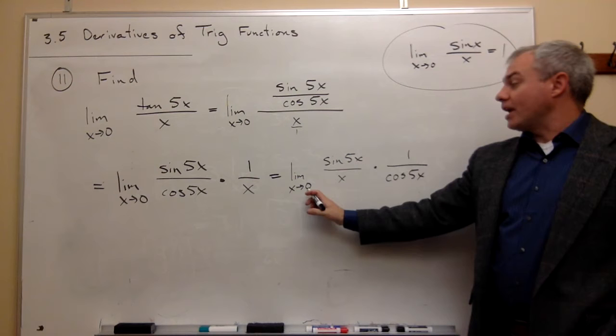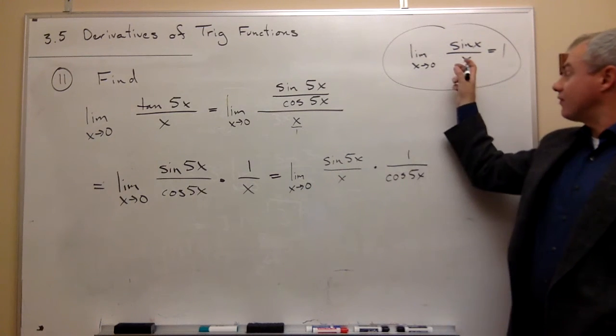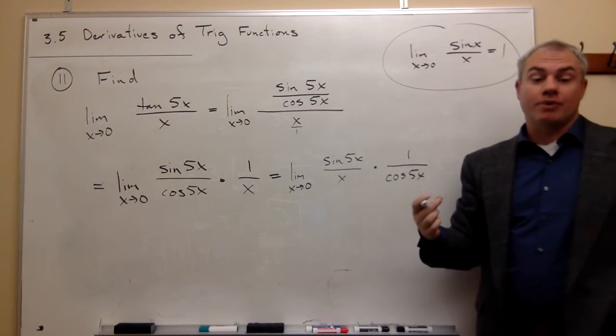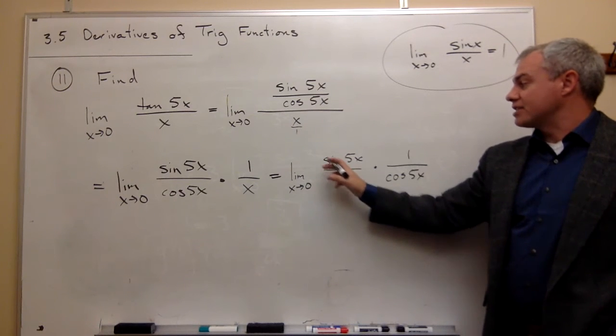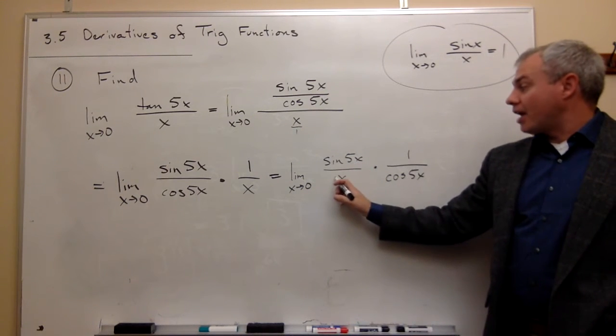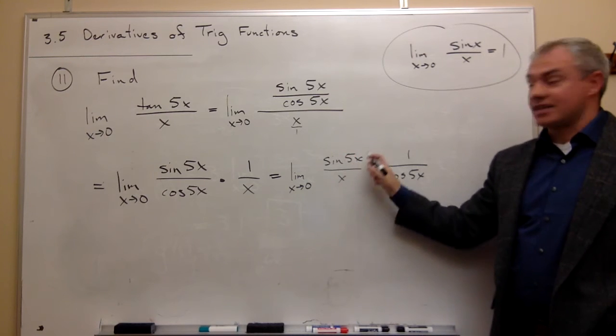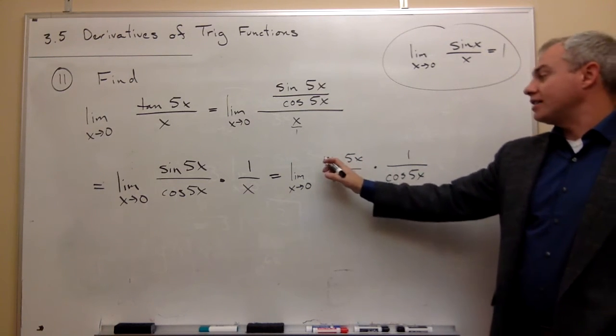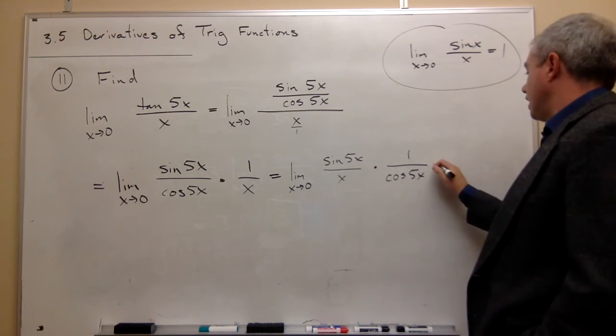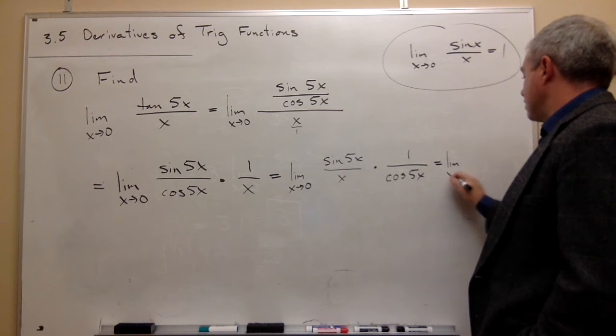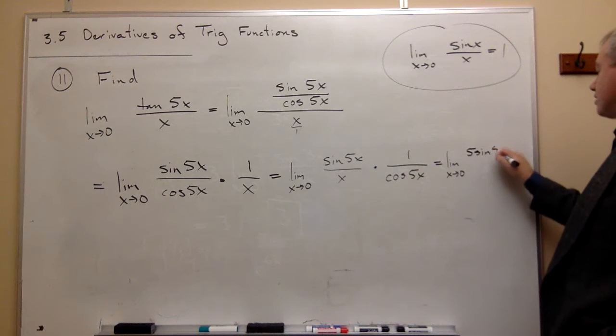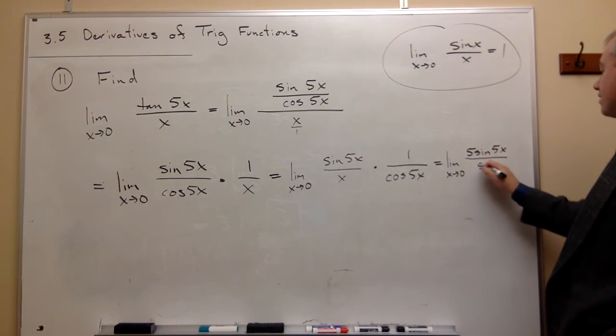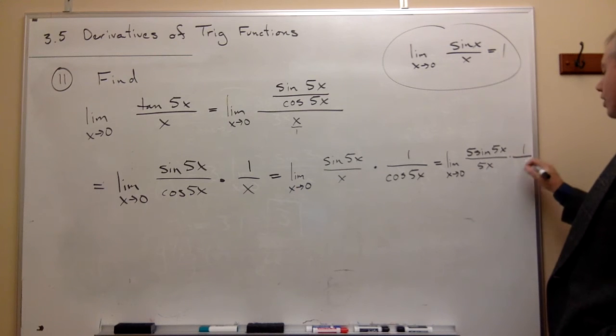So when I plug in 0 here, this isn't quite in this form, but it's very much like problem number 7 that we just looked at. What I need to do is multiply the top and the bottom of this guy by 5, so that the bottom is going to be the same thing as what's inside the sine. So let's multiply the top and bottom by 5. If I do, I get the limit as x goes to 0 of 5 sine of 5x divided by 5x times 1 over cosine of 5x.